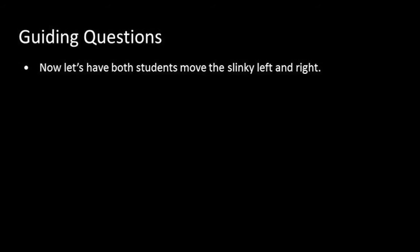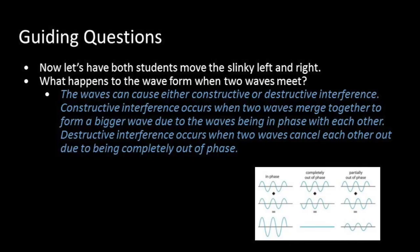Now let's have both students move the slinky left and right. What happens to the waveform when the two waves meet? Well, the waves can cause either constructive or destructive interference. Constructive interference occurs when two waves merge together to form a bigger wave due to the waves being in phase with each other. Destructive interference occurs when two waves cancel each other out completely due to being completely out of phase.